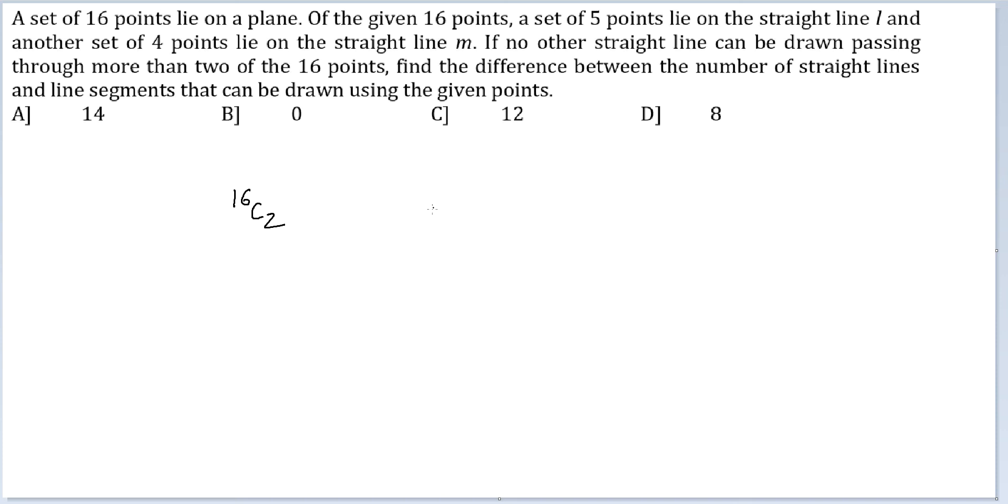Now, the number of lines. We start with 16C2, then subtract 5C2 for the 5 points that lie on a straight line, and add back 1 because at least one line is definitely there.